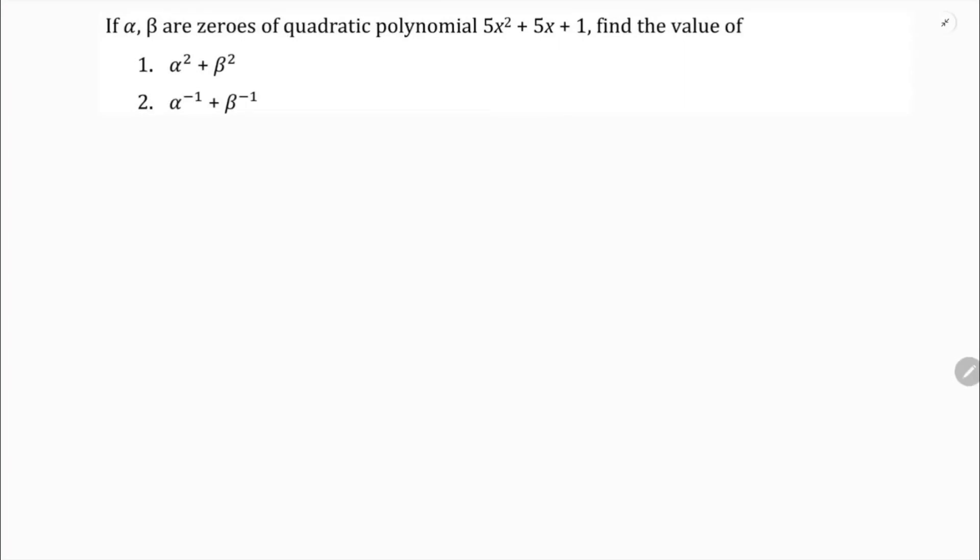If alpha, beta are zeros of quadratic polynomial 5x square plus 5x plus 1, find the value of alpha square plus beta square.